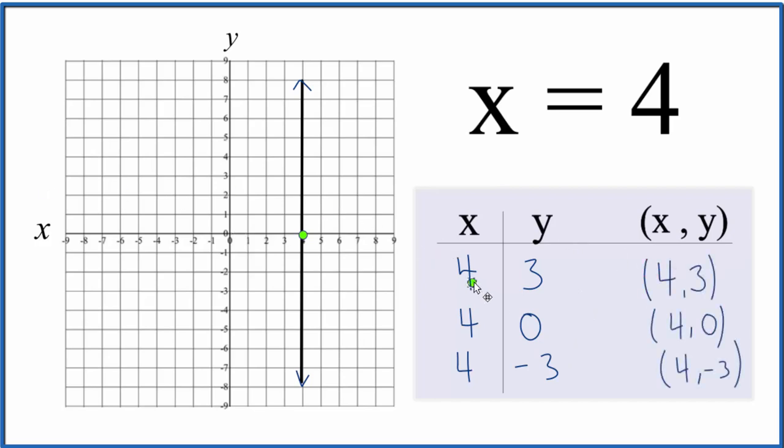So we go x equals 4, y equals 3. Here's x equals 4, and we go 1, 2, 3—right on the line. If x is 4, y is 0.